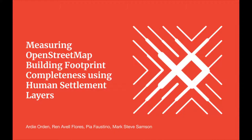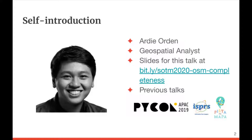Good day everyone. My talk today will be about a problem that we worked on involving OpenStreetMap and GIS. My name is Ardi Oden. I work as a geospatial analyst at a consultancy in the Philippines called Thinking Machines. Our company helps clients make better data-driven decisions through business intelligence, data warehousing, and data science. My role is to provide domain expertise in GIS using spatial analysis and web mapping. The slides for this talk can be found at the bit.ly link shown on screen. Today I'm going to talk about finding where unmapped areas are, and the method and tools we used.